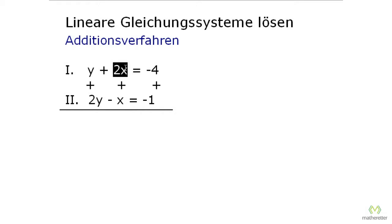And here in our example we will do that with the second equation. Why? We can get rid of 2x here by getting minus 2x here. So the minus x has to become minus 2x for that. And how do you do that?